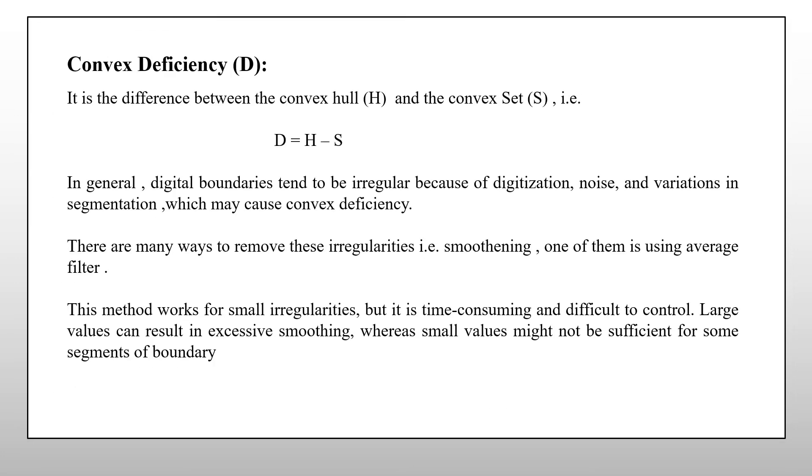Convex deficiency is the difference between the convex hull and the convex set S. The problem here is digital boundaries tend to be irregular these effects usually result in convex deficiencies that have small meaningless components scattered randomly throughout the boundary.